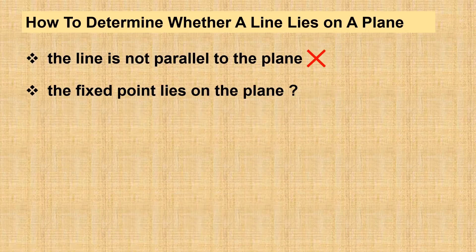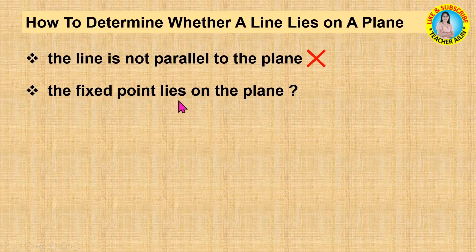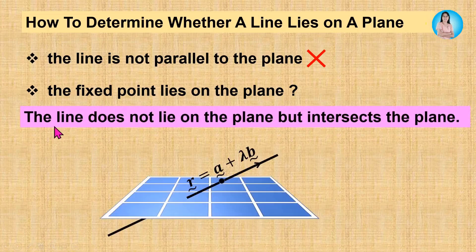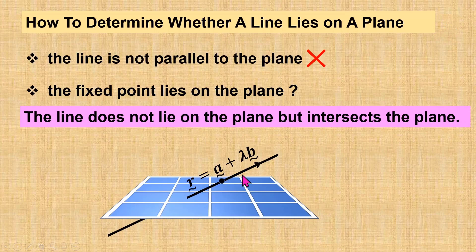If the line is not parallel to the plane — regardless of whether the fixed point lies on the plane or not — we conclude that the line does not lie on the plane, but instead intersects the plane.